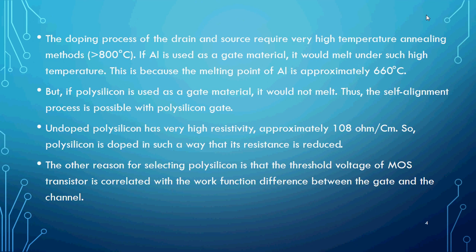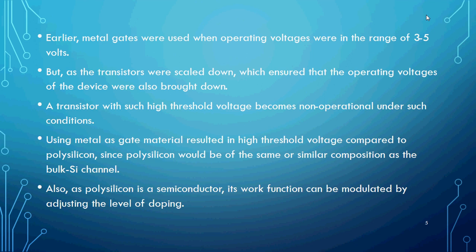Undoped polysilicon cannot be used as-is, especially for lower technology nodes. For higher nodes like 90 nm or 180 nm it is not a problem, but for lower nodes such as 25 nm, 14 nm, 10 nm, 7 nm, and 5 nm, polysilicon's high resistivity is an issue. By adding doping concentrate — adding impurities — we can change the resistivity of the polysilicon from 10⁸ ohms/cm² to a desired value, either increasing or decreasing the resistivity.